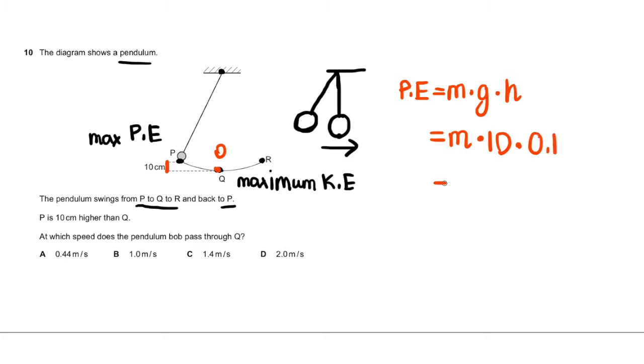So 0.1 into 10, that's just 1, because 0.1 is 1 upon 10, and 1 upon 10 into 10 is 1. So the potential energy at P, or rather all the energy of the pendulum, is equal to M joules, joules being the unit of energy.